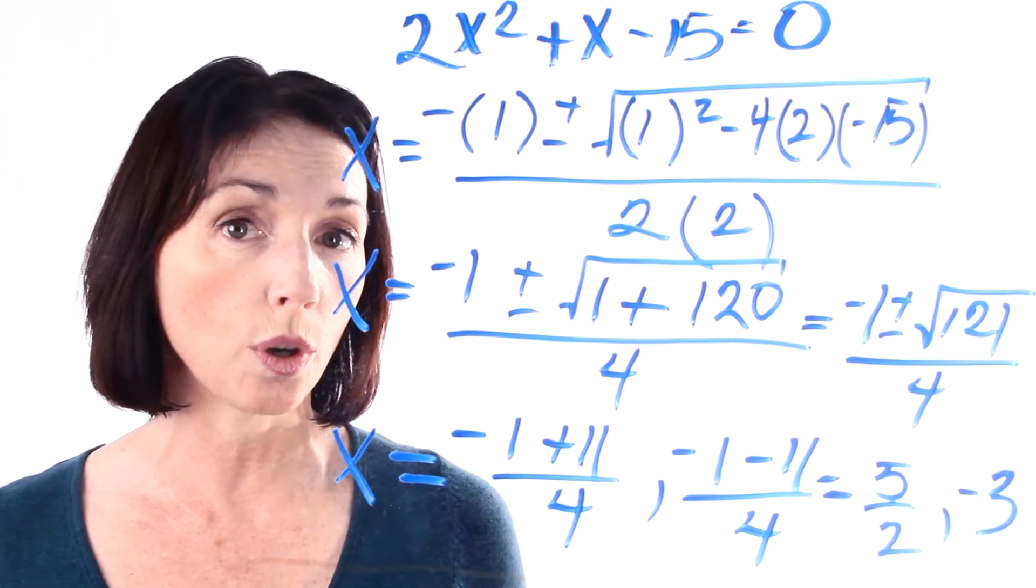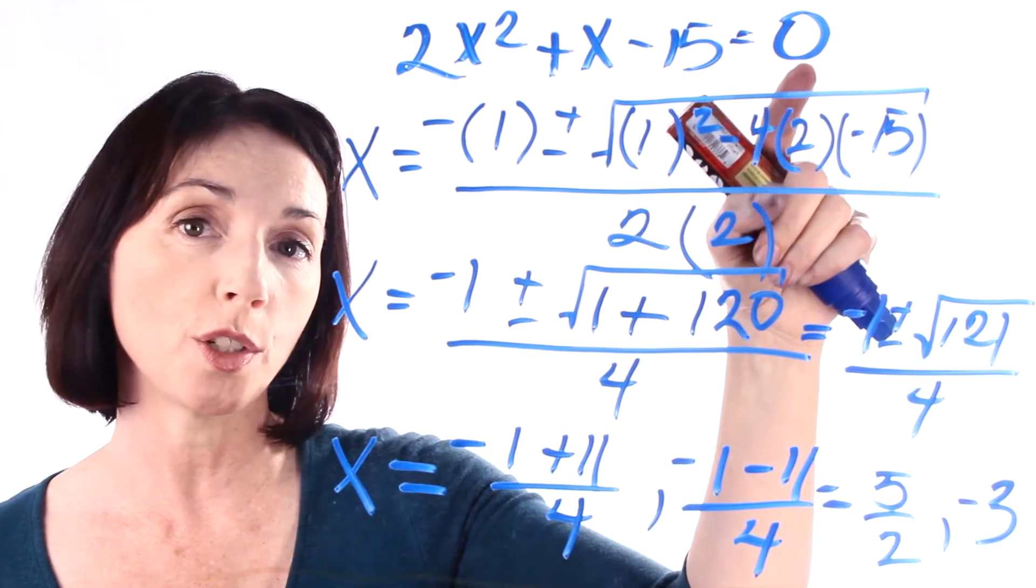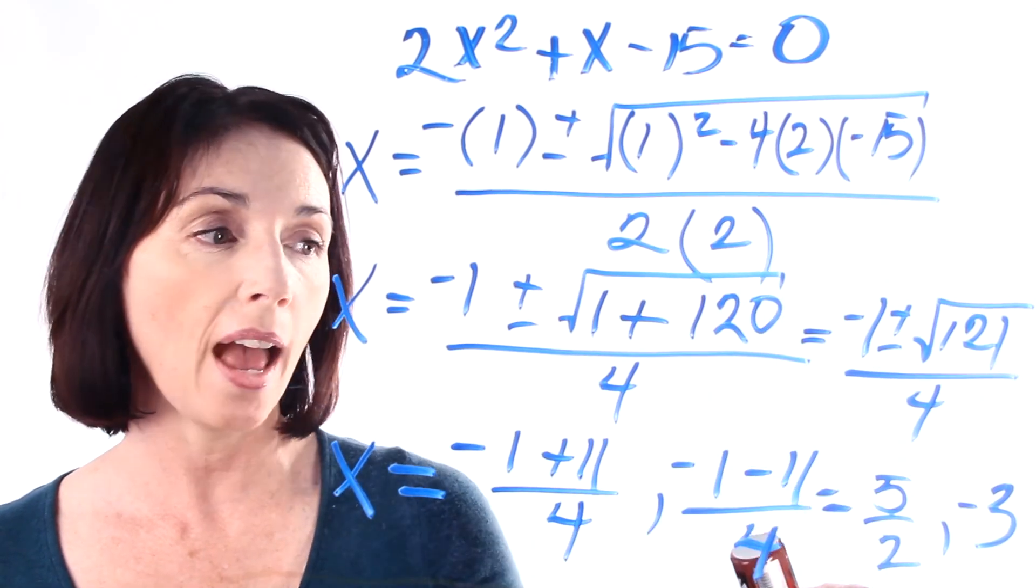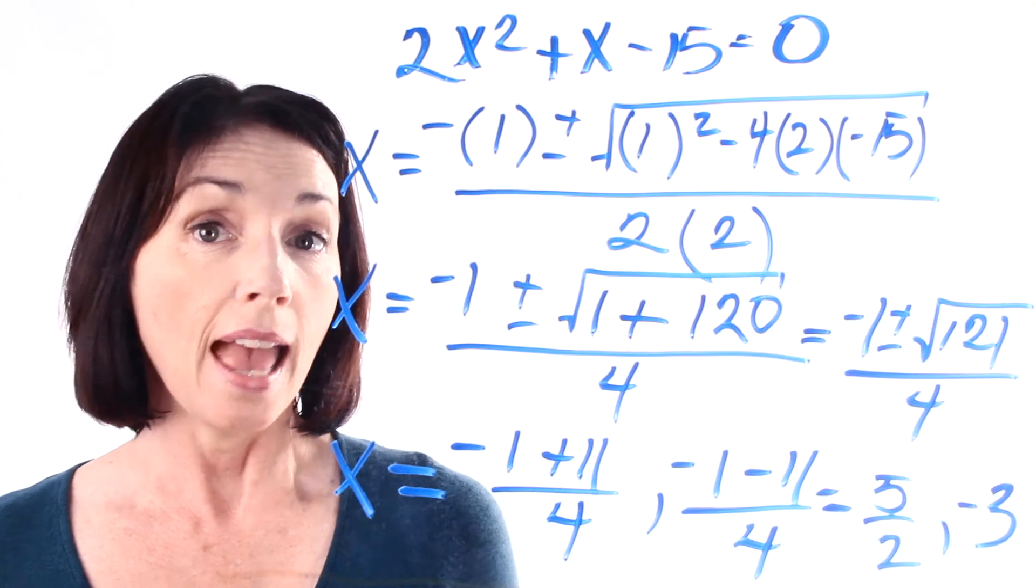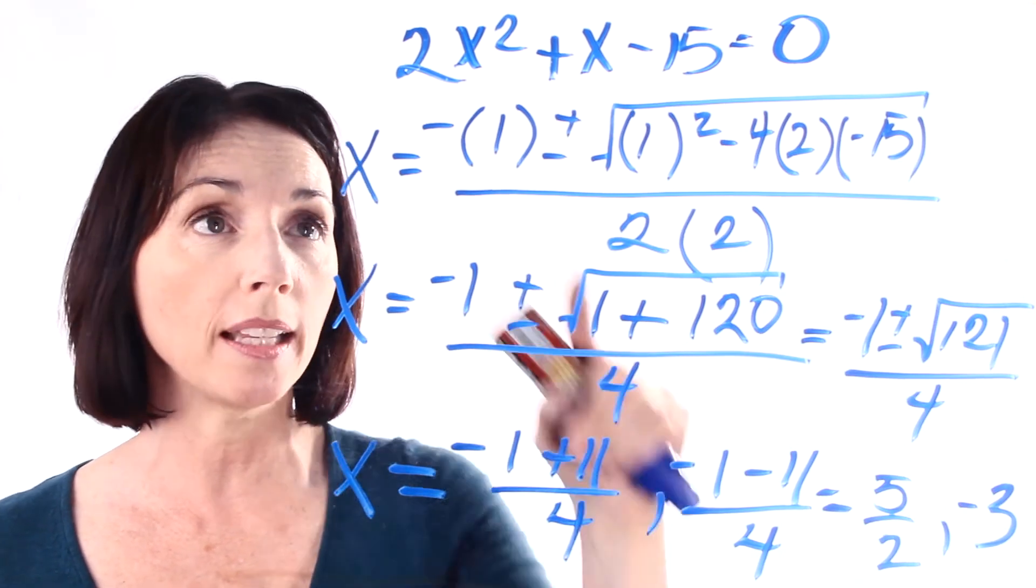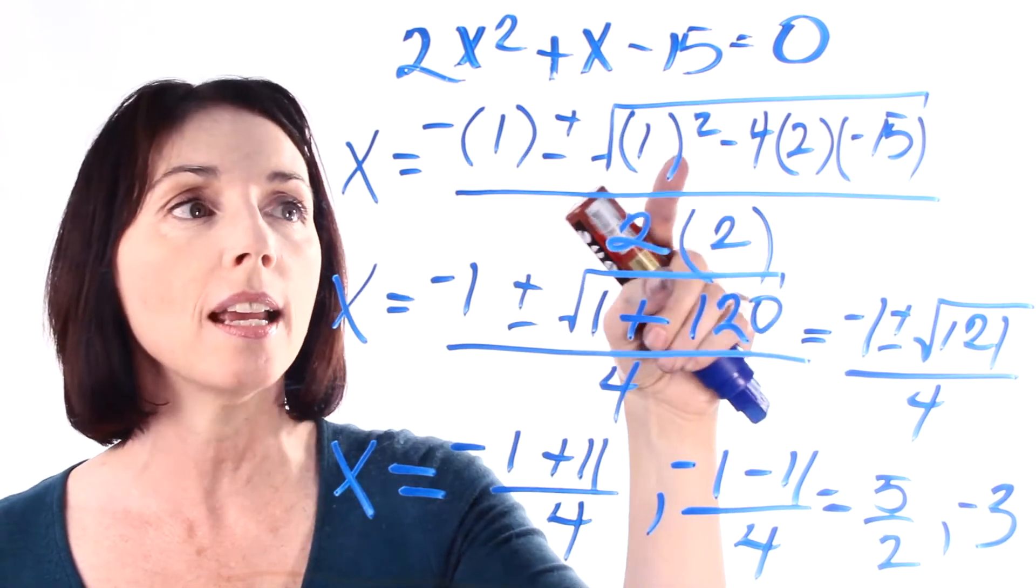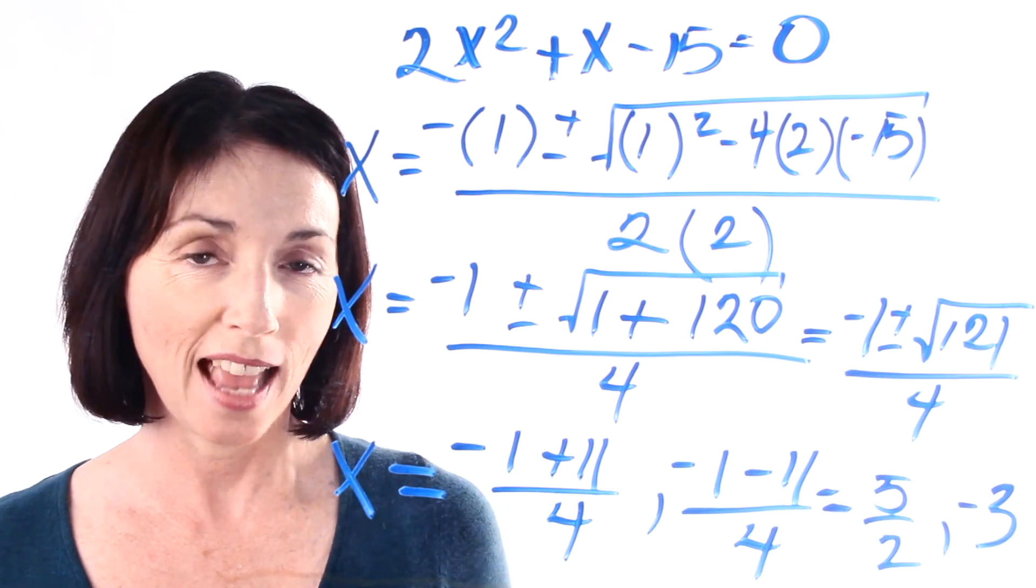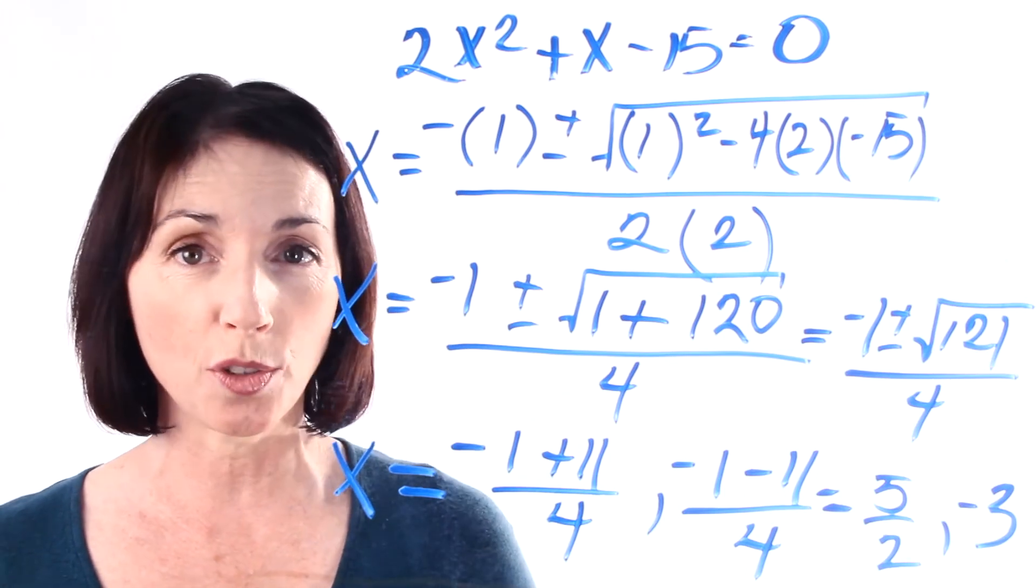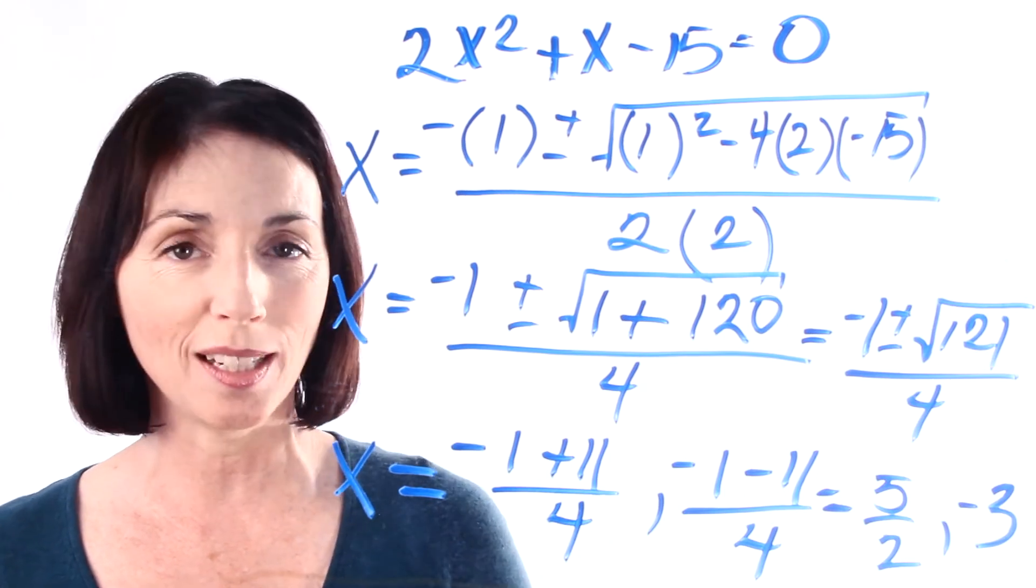So the two roots or solutions of our quadratic equation are 5 halves and negative 3. And all of that just comes from plugging the coefficients and the constant into the quadratic formula. And that's an example of using the quadratic formula to solve a quadratic equation.